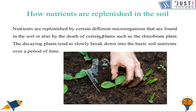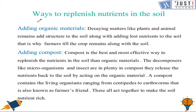How are nutrients replenished in the soil? Plants take nutrients like phosphorus, potassium, and nitrogen from soil. If we keep planting the same crop year after year it makes the soil deficient in certain nutrients. In the natural environment, nutrients are replenished by the decaying of plants, which adds humus to the soil. Compost and other organic decaying materials also add structure and nutrients to the soil. Certain microorganisms and nitrogen-fixing plants such as Rhizobium, along with decaying plants, slowly break down into soil nutrition.